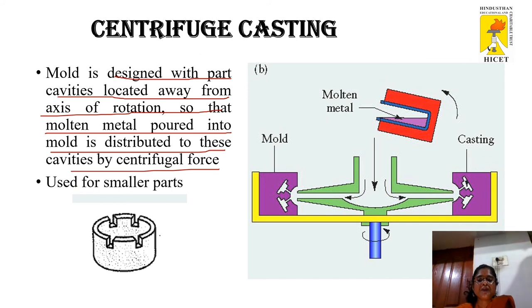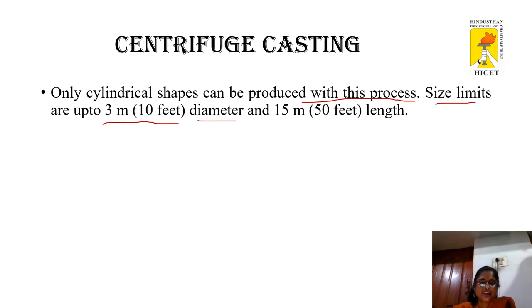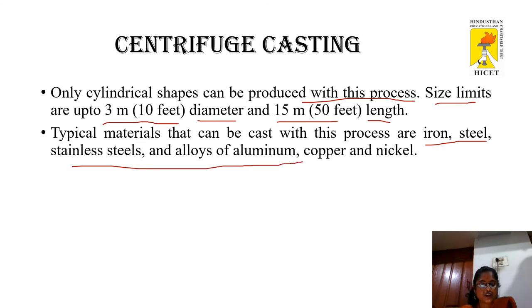To compare the three types: true centrifugal casting is used to make tubular parts; semi-centrifugal casting is used for solid castings; and centrifuge casting is used to make smaller parts. Only cylindrical shapes can be produced with centrifugal casting, with size limitations of up to 3 meters (10 feet) in diameter and 15 meters (50 feet) in length. Typical materials include iron, steel, stainless steel, and alloys of aluminium, copper, and nickel.